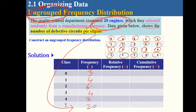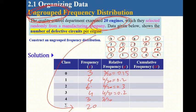The relative frequency is calculated by dividing each frequency by the total. So it will be 0.15, 0.2, 0.3, 0.2, and 0.15 again. The total symbol means sum, and they add to 1.